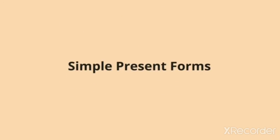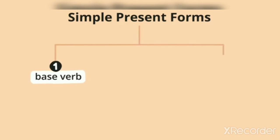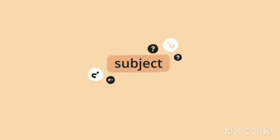Look at here verb forms. In simple present tense forms, there are two verbs: the base verb and the verb with S.